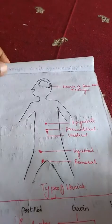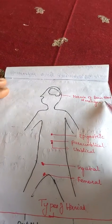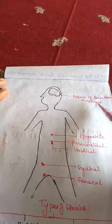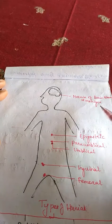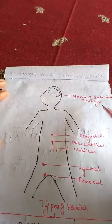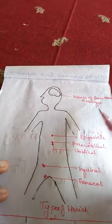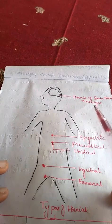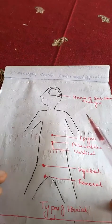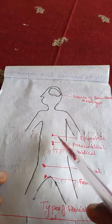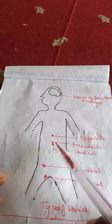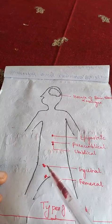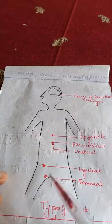Now let us see the different types of hernias. Herniation of the brain tissue and meninges can occur. This is uncommon and the most common cause is doing a lumbar puncture for CSF extraction during raised intracranial pressure, which is an absolute contraindication. More common hernias include epigastric hernia, para-umbilical hernia, umbilical hernia, and in the inguinal region, inguinal hernia and femoral hernia.